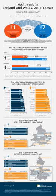Inequity implies some kind of social injustice. If one population dies younger than another because of genetic differences — a non-remediable, uncontrollable factor — we tend to say there is a health inequality. On the other hand, if a population has a lower life expectancy due to lack of access to medications, the situation would be classified as a health inequity. These inequities may include differences in the presence of disease, health outcomes, or access to health care.